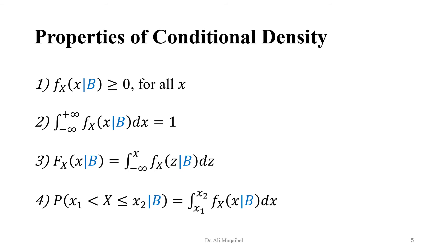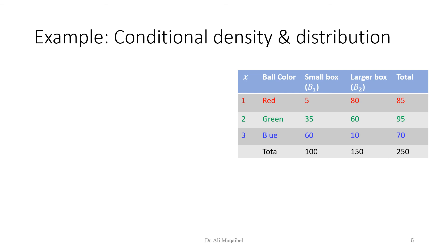Maybe it's time now to see some examples. Let's do an example for the conditional density and distribution — very similar to the probability case. The following table shows that we are going to draw a ball; the ball could be red, green, or blue. To make it a random variable, we assign number 1 to red, number 2 to green, and 3 to blue. We have two different boxes — small box and large box. There are five red balls in the small box, 80 balls in the large box, and so on for all different colors. We call the event of getting a small box B1, and the event of having a large box B2. A typical example for conditional probability — we have two mutually exclusive events: selecting the small box or the large box.